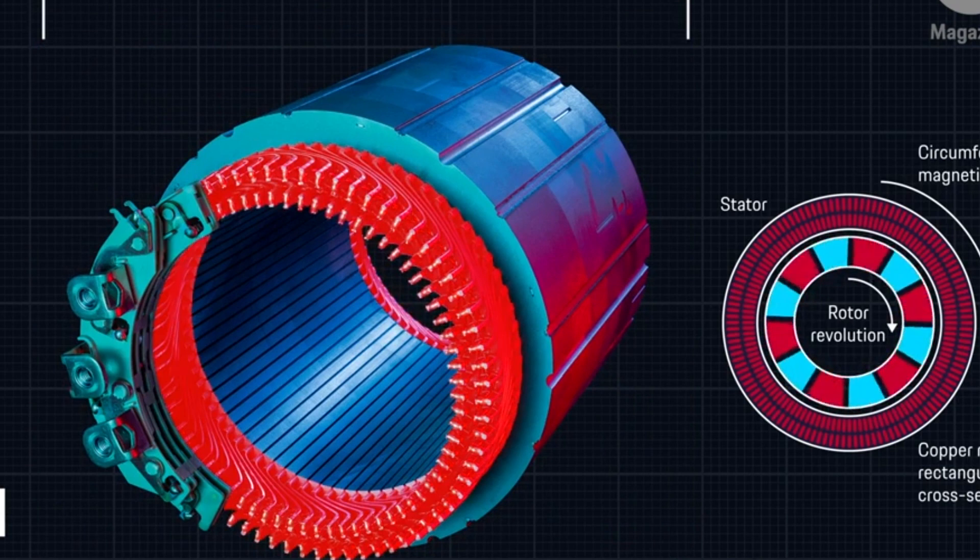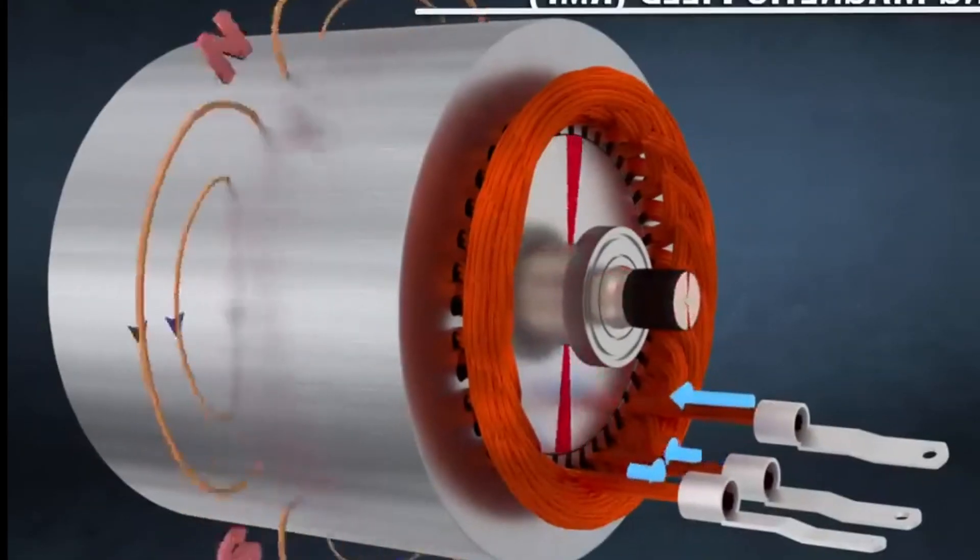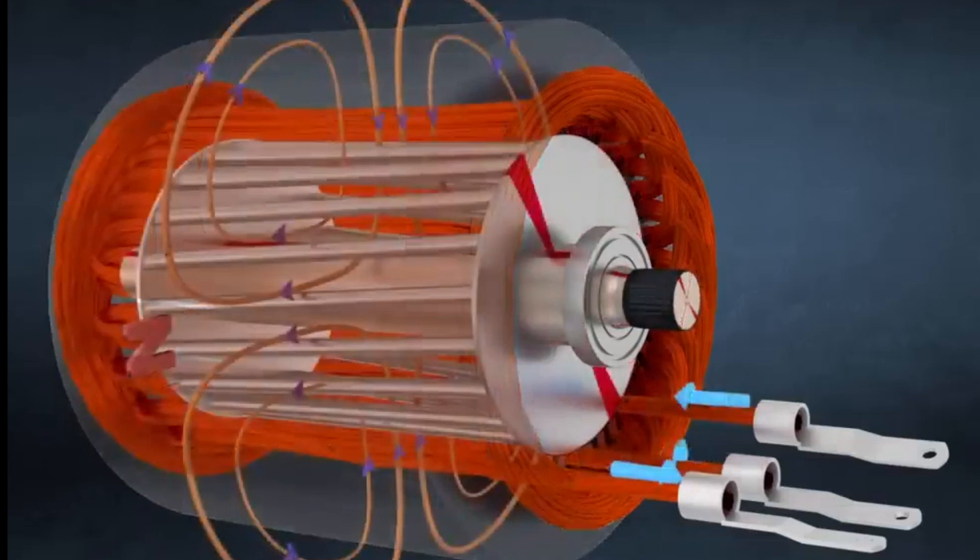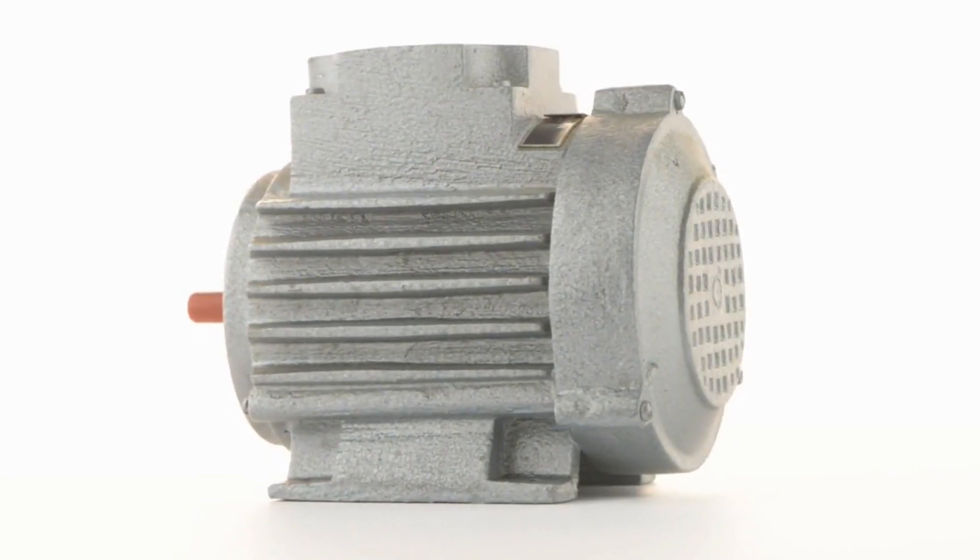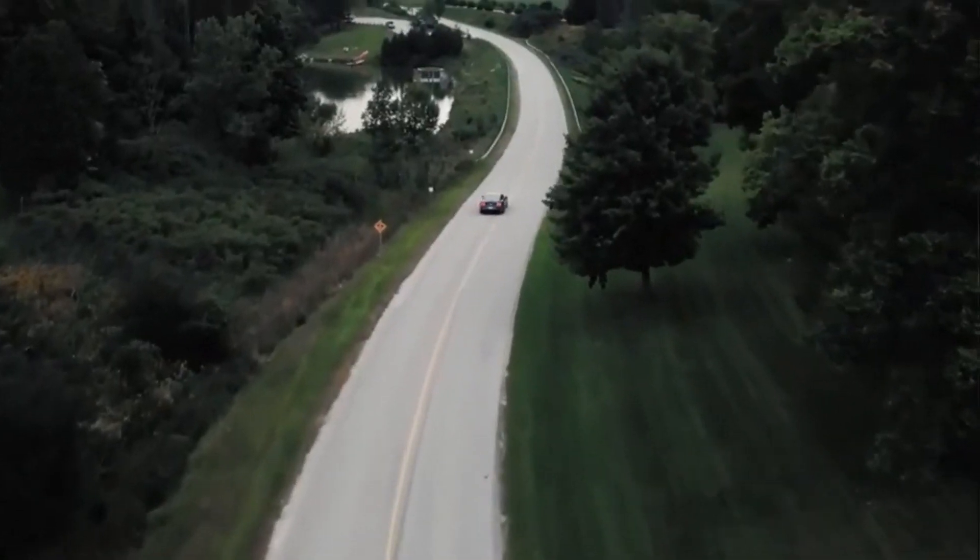One of the key advantages of this technology is its ability to provide higher torque and power output while maintaining a smaller size and weight. This is because the flat copper bars can be packed more tightly, resulting in a greater number of turns per coil and a higher magnetic field density. The reduced weight and size of the motor also lead to increased energy efficiency and a longer driving range for electric vehicles.